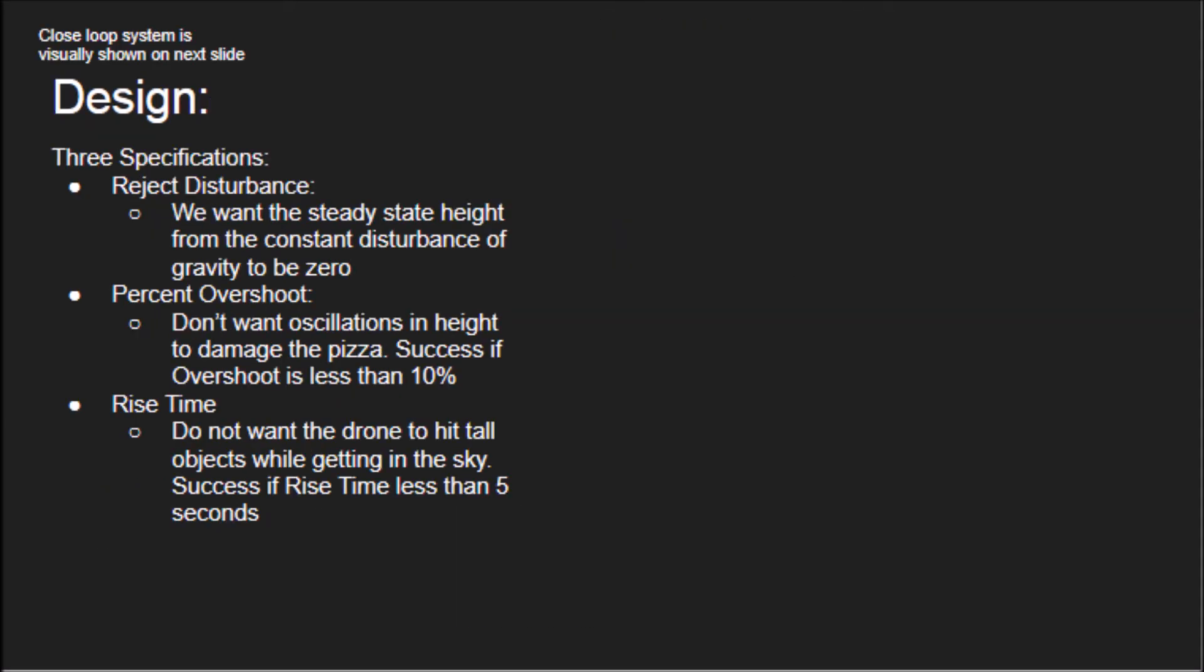We have three design requirements that we want our system to have. The first is to be able to reject disturbance. This is done if the steady state height from gravity is zero. We also want to have a low percent overshoot so we do not damage the pizza. This is a success if the percent overshoot is less than 10%.